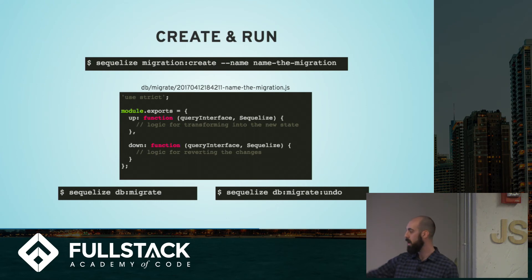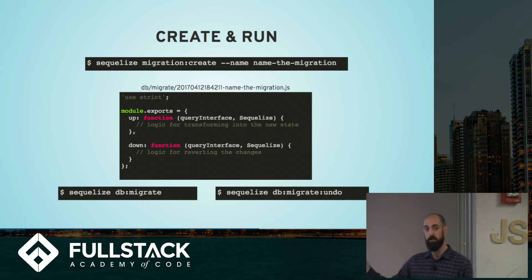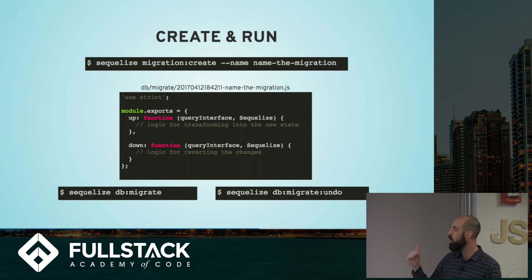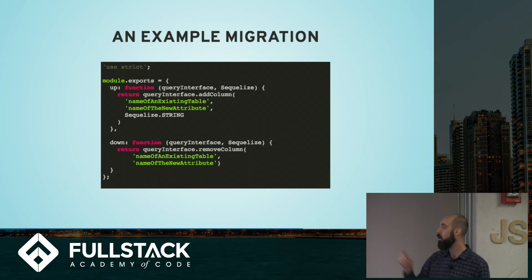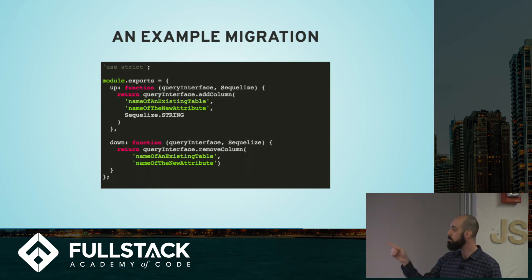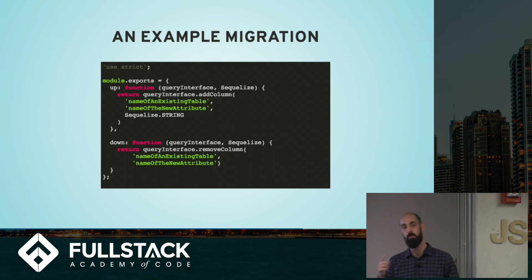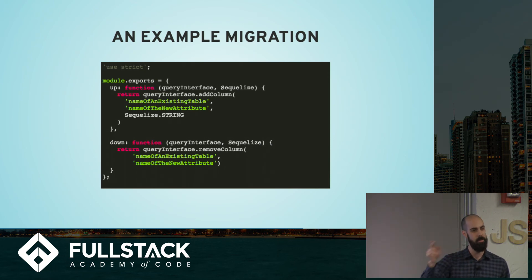When you're ready to run your migration, you'll go back to your command line and run `sequelize db:migrate`. That will look into your migrations folder, find each migration file, and run the up functions one after another. If you're interested in undoing those changes, you'd run `sequelize db:migrate:undo`, which will run the most recent down function one at a time so you can continue calling them. Here's an example: if you're interested in adding a column, in your up function you'd call the addColumn method off of the query interface object, name the table you're adding a column to, name the column as the second parameter, and describe its data type.